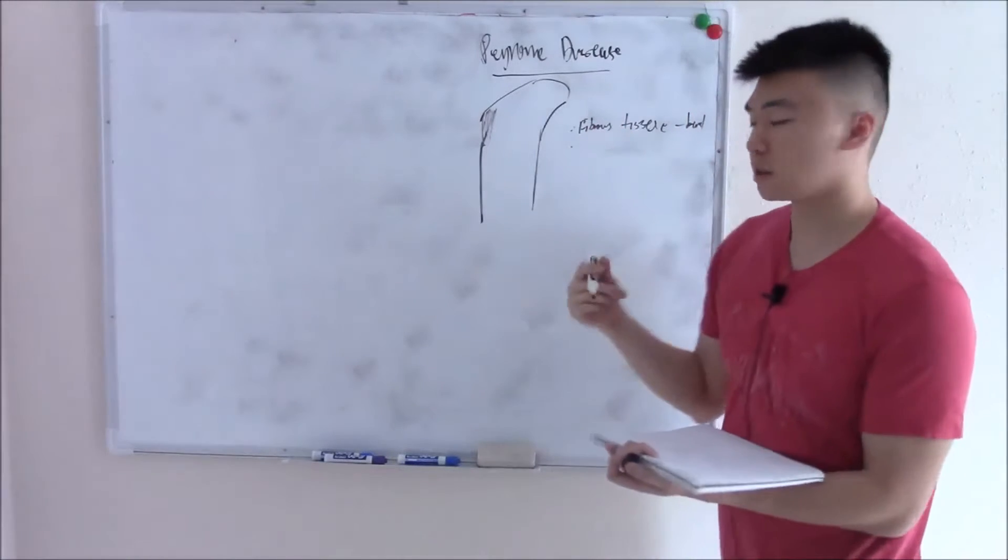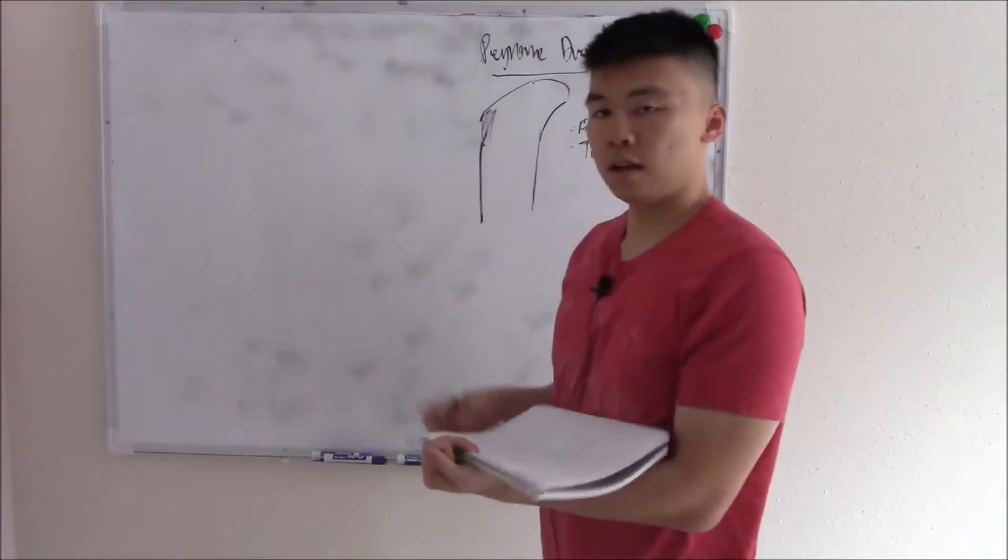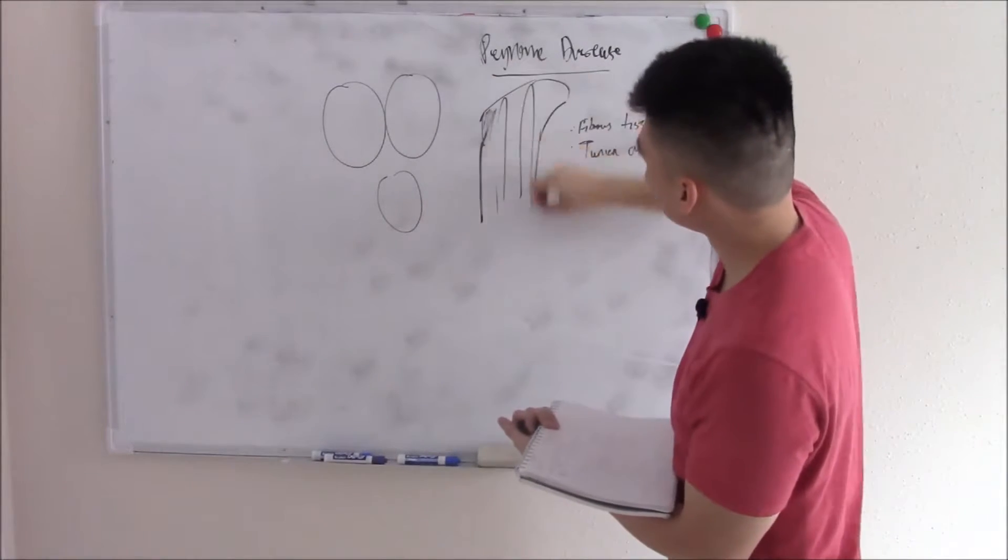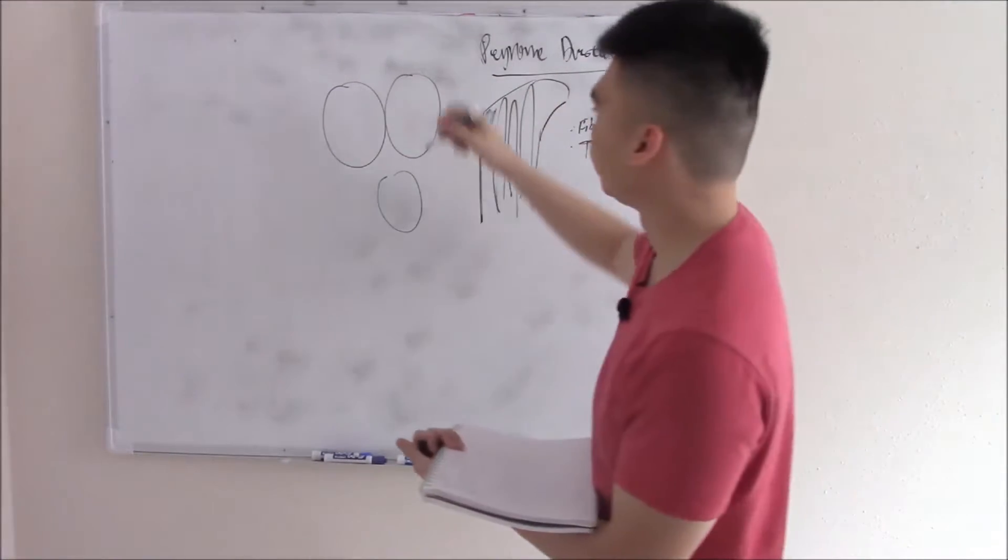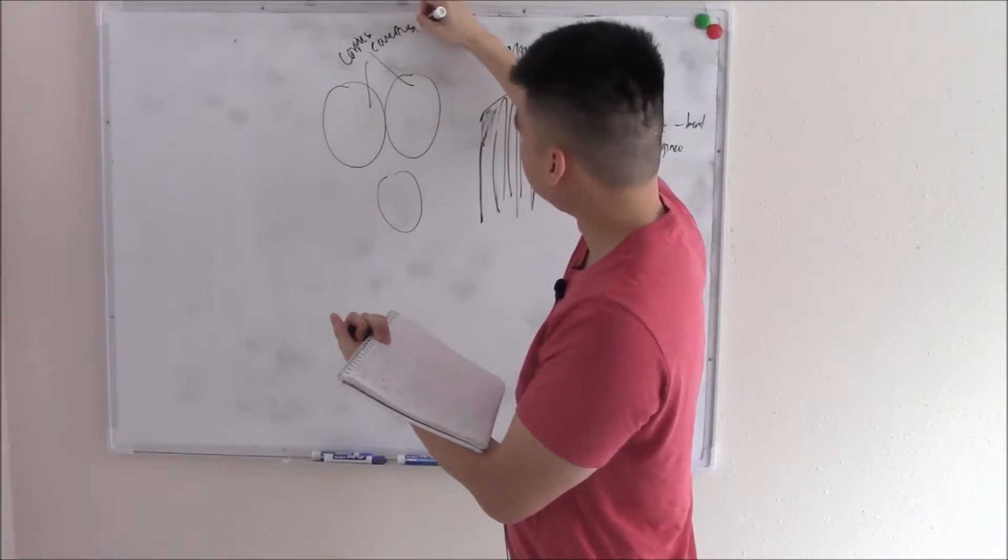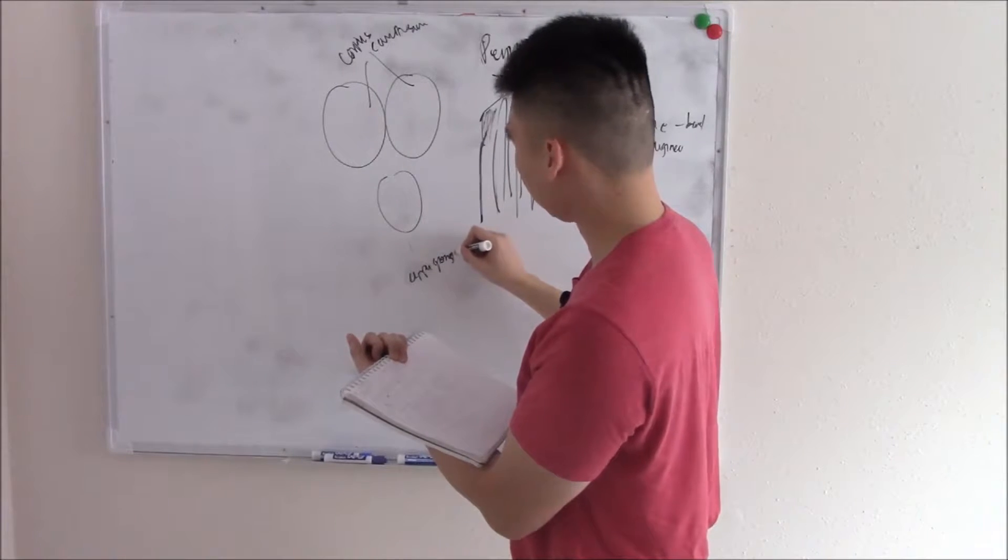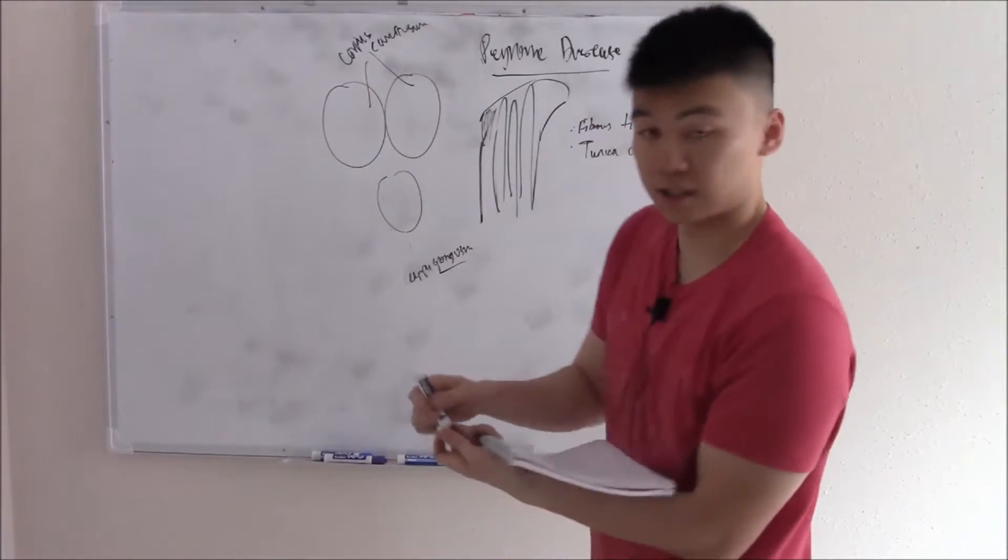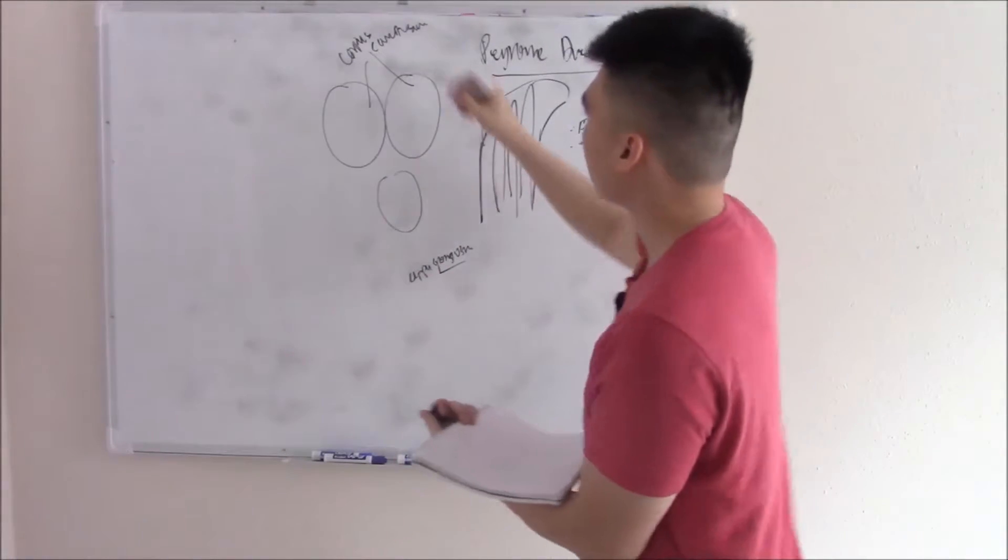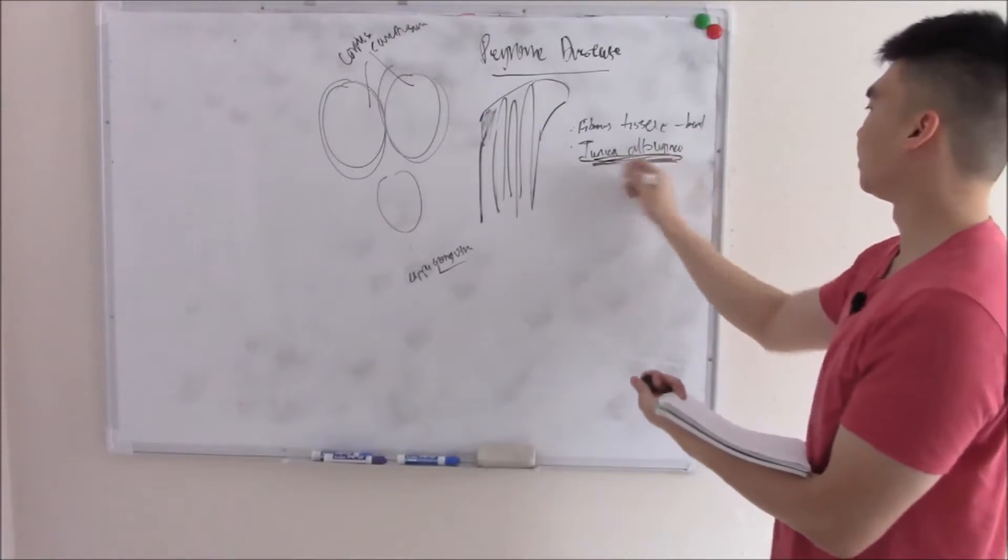That tissue develops on what we call the tunica albuginea. What is tunica albuginea? Recall the penis is made up of these three cylindrical sponges that basically go up the length of the penis. The two large paired ones are your corpus cavernosum and the bottom one is your corpus spongiosum. I think that's a very fitting name because they're like sponges. They fill up with blood and that's how your penis can expand or contract.